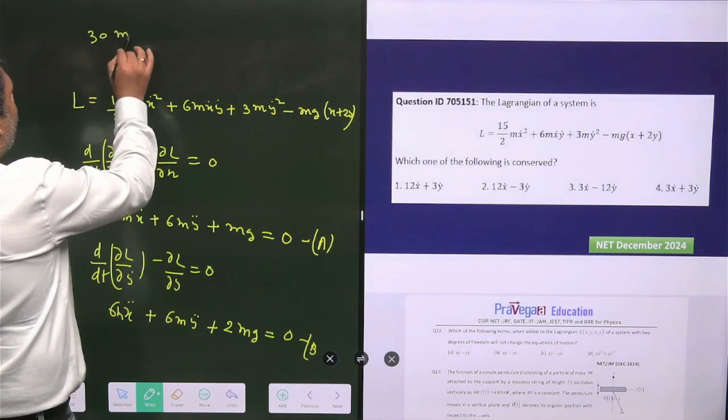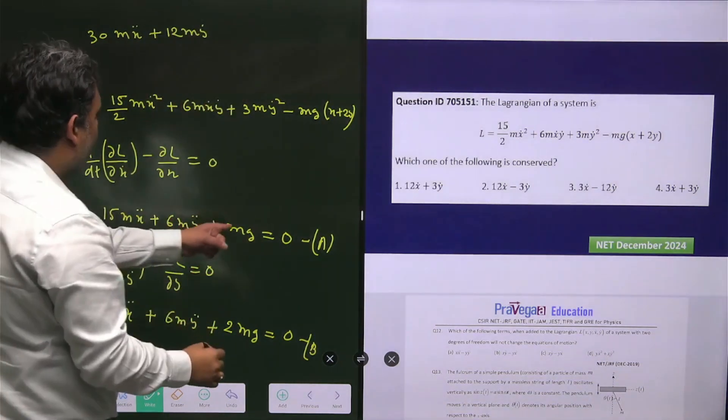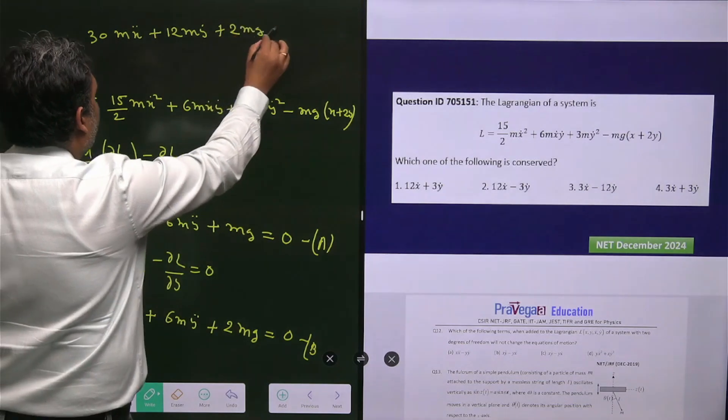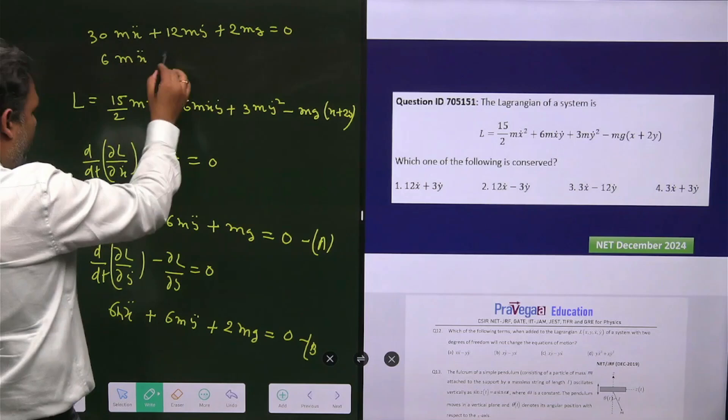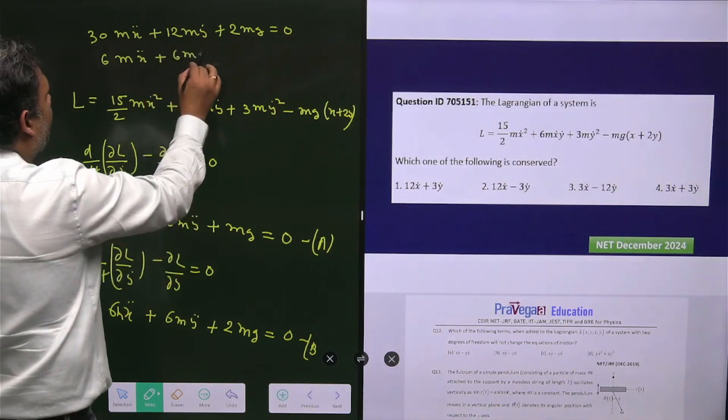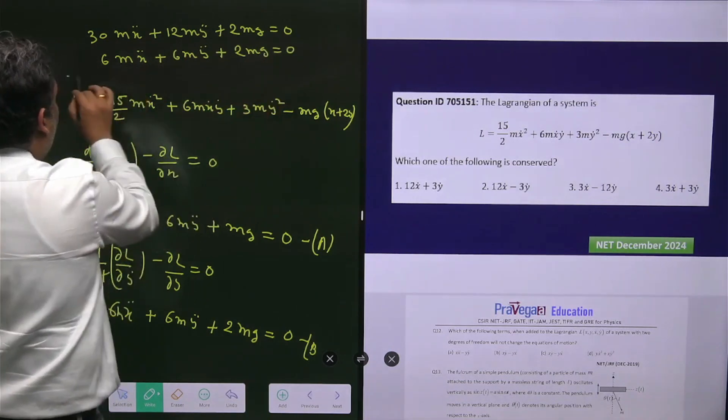So we have basically 30mẍ + 12mÿ + 2mg = 0. And here you have 6mẍ + 6mÿ + 2mg = 0.